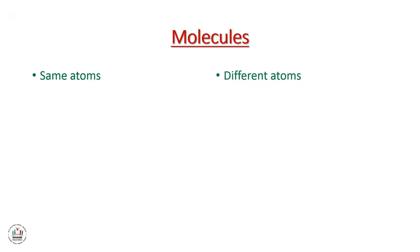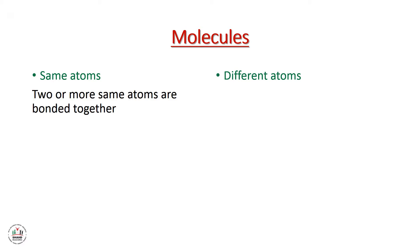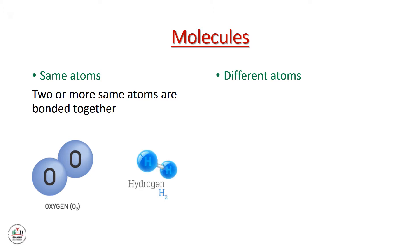In the first type, molecules are composed of the same atoms — two or more same atoms bonded together by a chemical bond. For example, oxygen gas, O2, is composed of two oxygen atoms bonded together. A second example is hydrogen gas, H2, also composed of two hydrogen atoms bonded together. In both examples, the molecule is made up of the same type of atoms — either oxygen or hydrogen.